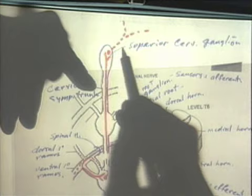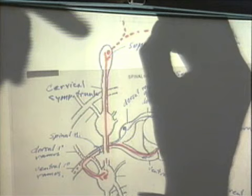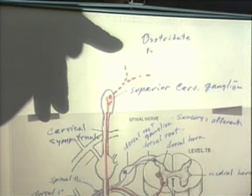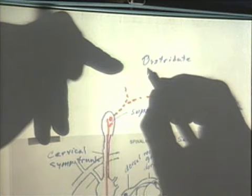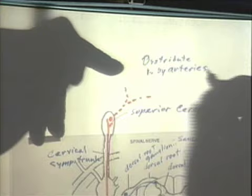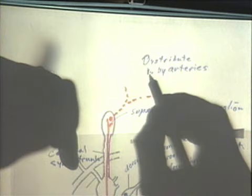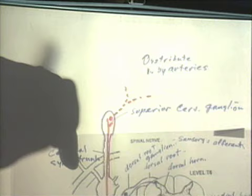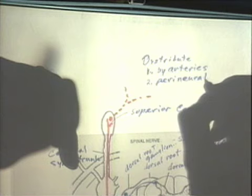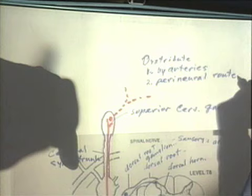The second-order neuron fibers distribute by two routes: by vessels — specifically arteries — with branches going to both the internal carotid and external carotid, so if you know which blood vessel supplies an area, you know how the sympathetic system gets there. There are also perineral routes, which are less common.